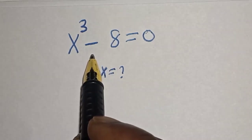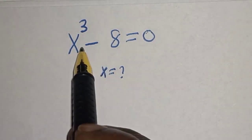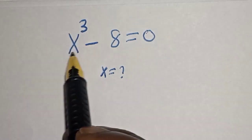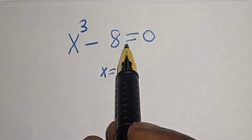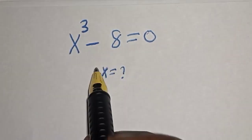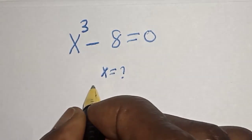Hello, welcome to Magist. In this class we want to find the value of s from this equation: s raised to power 3 minus 8 is equal to 0. Like, share, comment and subscribe. Solution.